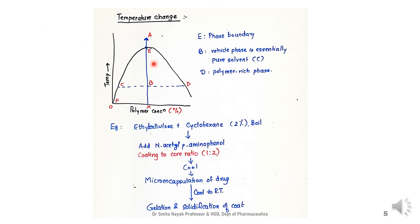If a core material exists at these temperatures, the coating material will coat the core material and, under proper polymer concentration, temperature, and agitation conditions, the polymer droplets will coalesce around the dispersed core particles to give embryonic microcapsules. At point B, the tie line indicates that the vehicle phase is essentially pure solvent as seen at point C, whereas the coexisting coating material phase indicated by point D is a concentrated polymer-solvent mixture.